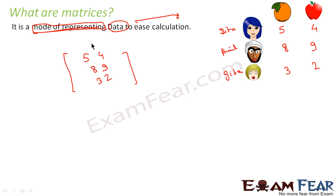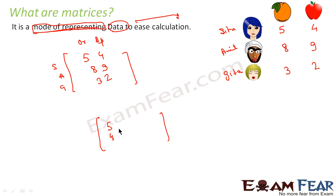Now, if you want to represent this data, what we can do is represent it in a box. In this box I can write five, four, eight, nine, three, two — where this column is orange, this column is apple, and these rows are Sita, Amit, and Gita. You can also represent this data the other way around — five, four on one row; eight, nine on another; three, two on another — where the rows represent orange and apple, and the columns represent Sita, Amit, and Gita.